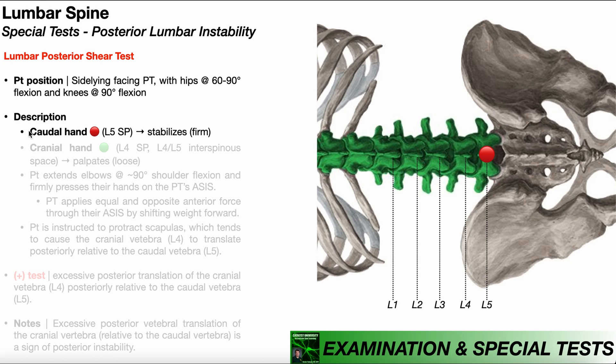My caudal hand, which is represented by the red dot, is going to be on the L5 spinous process, and I'm going to be stabilizing L5 and holding it firmly. We don't want L5 to move here.